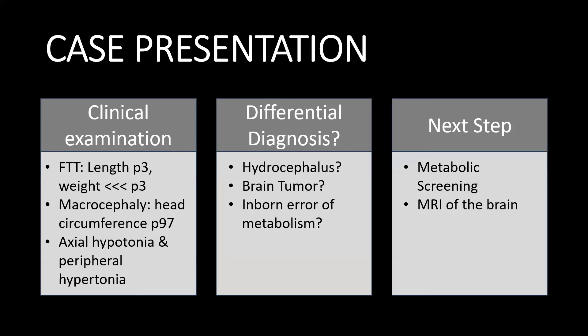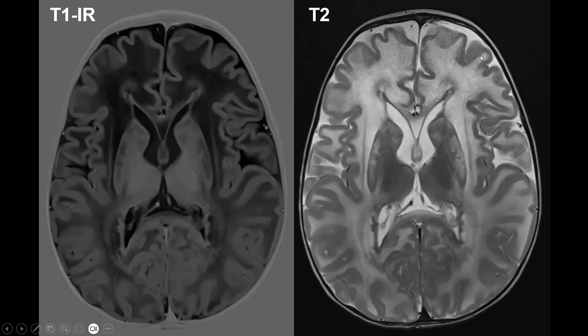The differential diagnosis of the pediatrician is very broad because of the macrocephaly. There is some worry about hydrocephalus or a brain tumor, but the regressive clinical presentation and failure to thrive makes the pediatrician most worried about a possible inborn error of metabolism. So the next step is to perform a metabolic screening and to do an MRI of the brain.